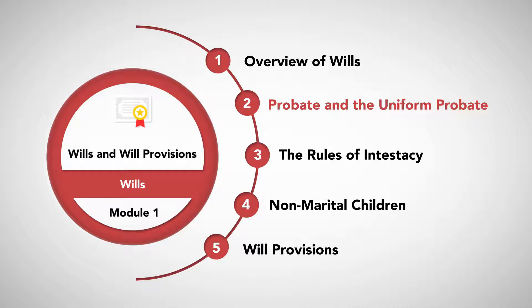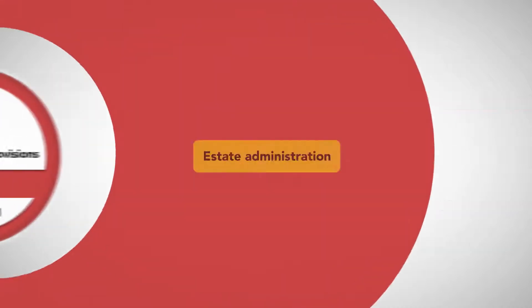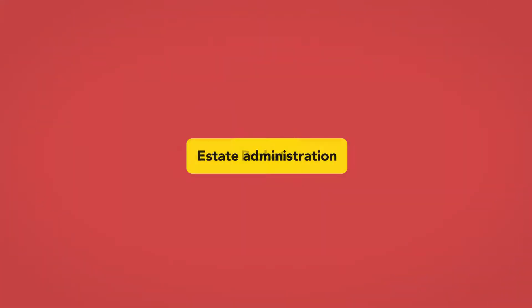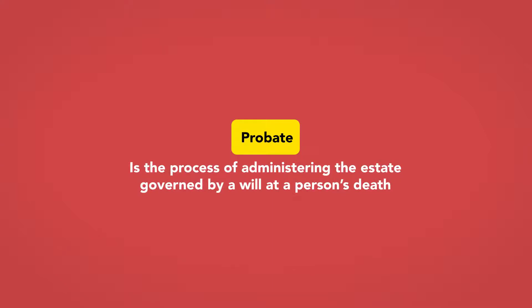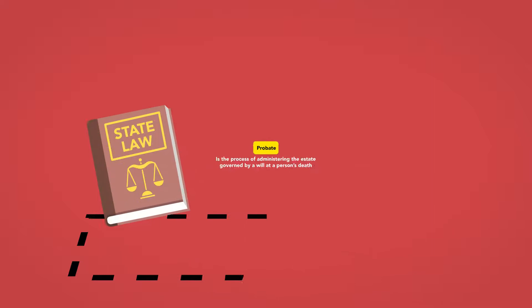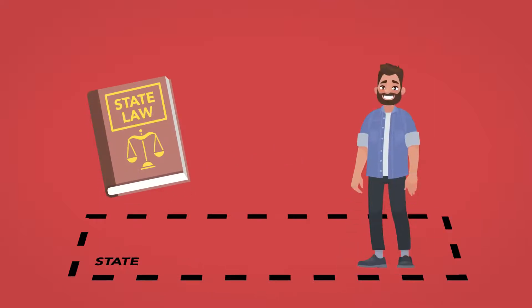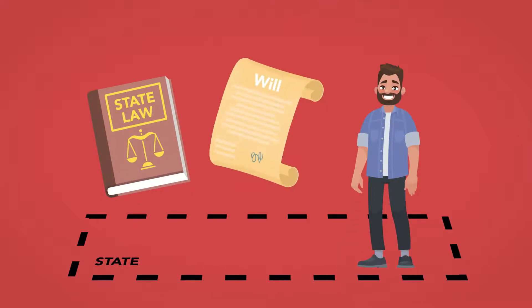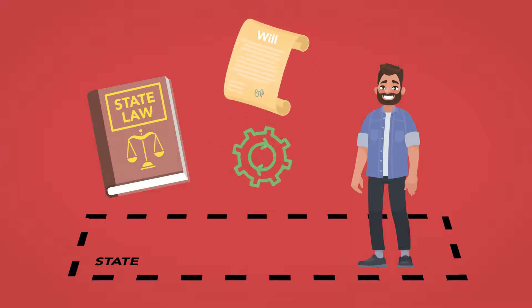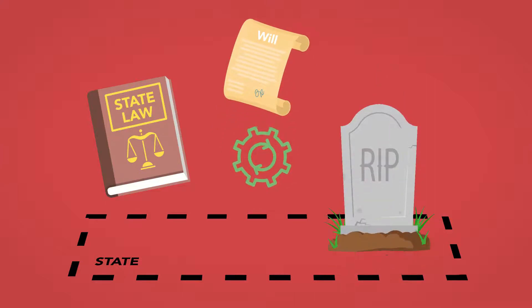Probate and the Uniform Probate Code. Estate administration, or probate, is the process of administering the estate governed by a will at a person's death. The laws of the state in which a person resides will govern the requirements for creating a valid will, as well as the process of administering the will and estate at death.